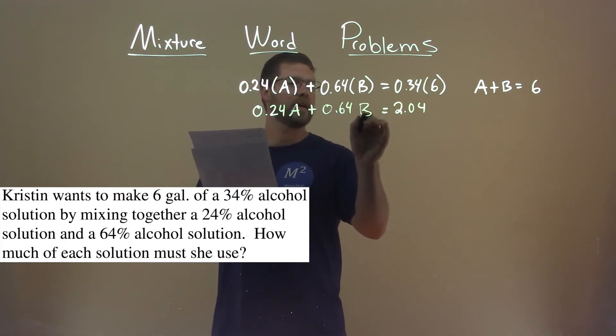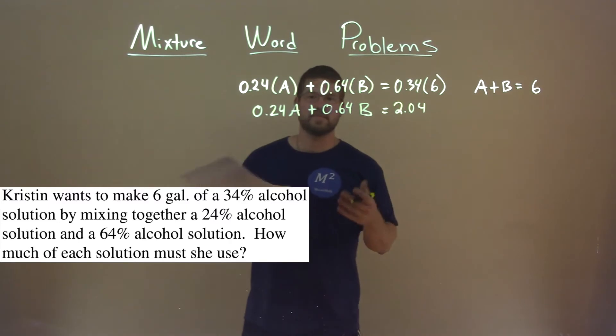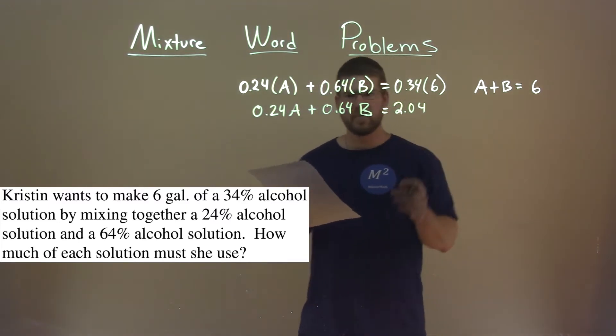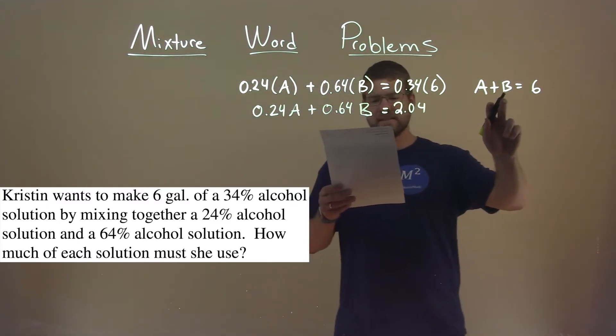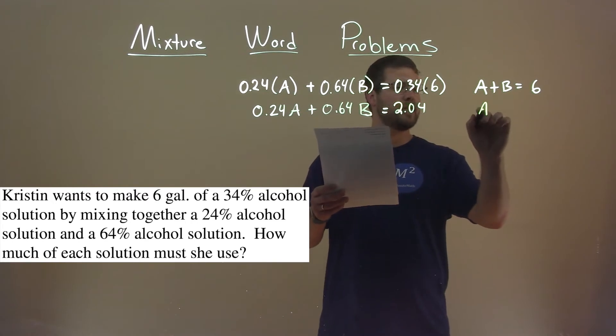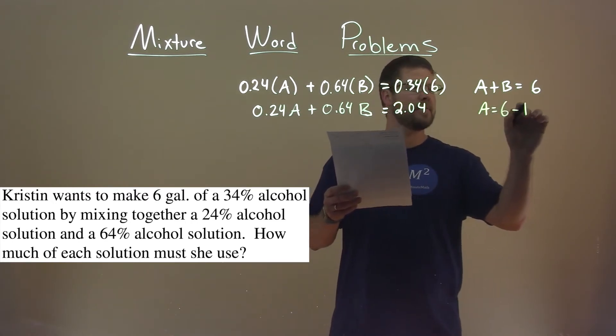And now this looks like a system of equations here, and we solve it. Well, let's go get A by itself here, subtracting a B to both sides, and A equals 6 minus B.